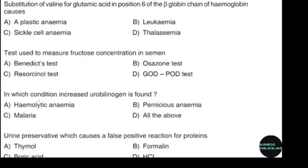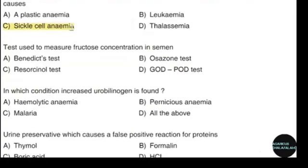Substitution of valine for glutamic acid at position 6 of the beta globin chain of hemoglobin causes sickle cell anemia. Correct answer: option C. The test used to measure fructose concentration in semen is the resorcinol test. Correct answer: option C.